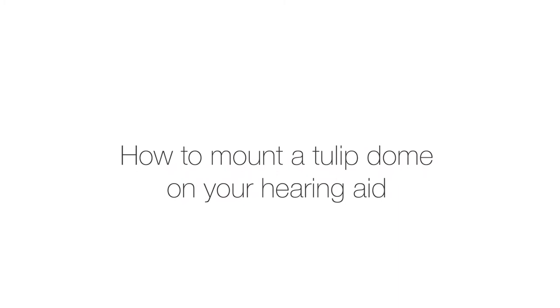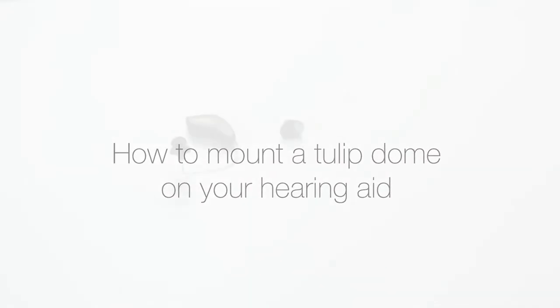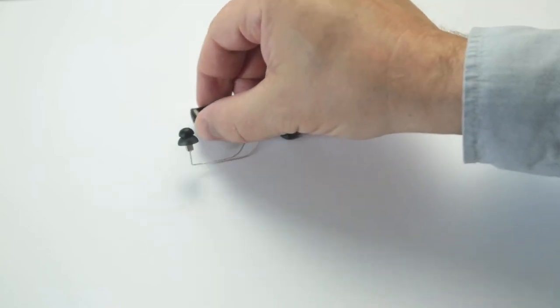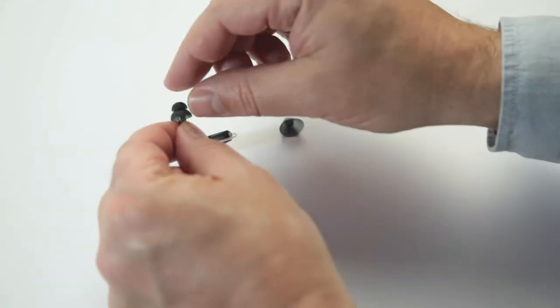How to mount a tulip dome on your hearing aid. Start by removing the existing dome by slowly pulling it from the hearing aid receiver in a controlled motion.